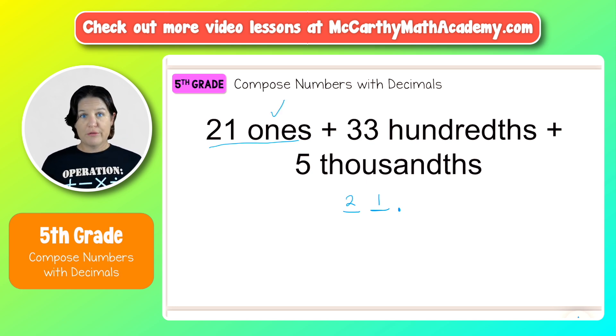We need to add 33 hundredths. Well, what I'm going to do is actually stack these values on top of each other and then add them together just to make sure. So 33 hundredths. That means here's the tenths, hundredths place. This digit three right there needs to land in that hundredths place, which means the other digit three goes in the tenths place to make it 33 hundredths.